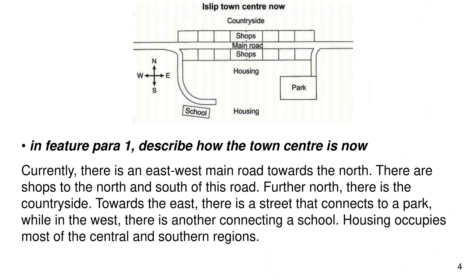In feature paragraph 1, describe how the town center is now. Currently there is an east-west main road towards the north. There are shops to the north and the south of this road. Further north there is the countryside. Towards the east there is a street that connects to a park, while in the west there is another connecting a school. Housing occupies most of the central and south regions.